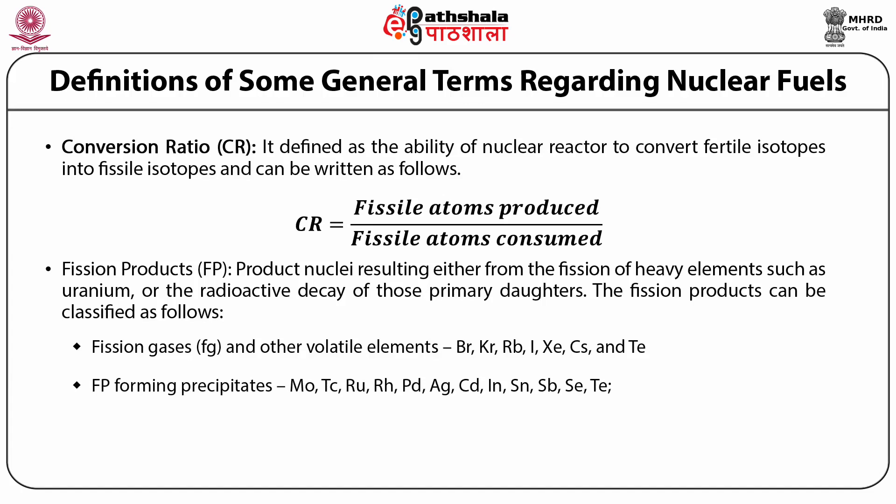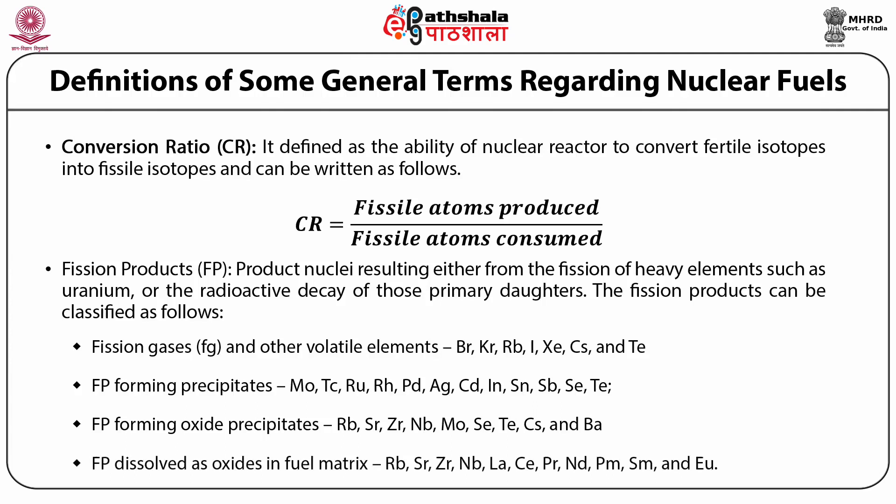Next is FP forming precipitates like molybdenum, technetium, ruthenium, rhodium, palladium, silver, cadmium, indium, tin, antimony, selenium and tellurium. Next is FP forming oxide precipitates: rubidium, strontium, zirconium, niobium, molybdenum, antimony, tellurium, cesium and barium. Last is FP dissolved as oxides in fuel matrix: rubidium, strontium, zirconium, niobium, lanthanum, cerium, praseodymium, neodymium, promethium, samarium and europium.